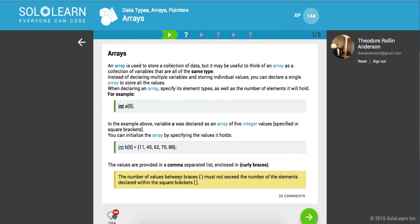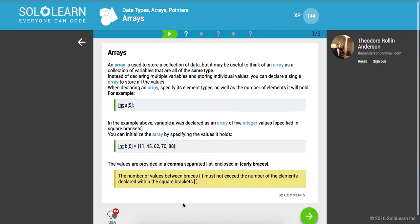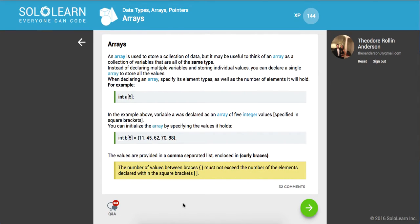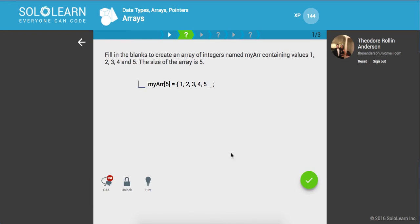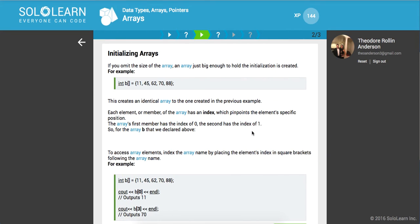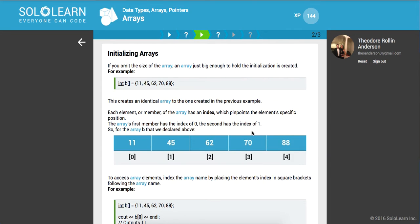The values provided in a comma separated list are enclosed in curly braces. The number of values between braces must not exceed the number of elements declared within square brackets. Fill in the blanks to create an array of integers named myArray containing values 1, 2, 3, 4, and 5. So we declare it, set it equal to five, put in each of the indexes, and finally close it out with the brace and run that code.